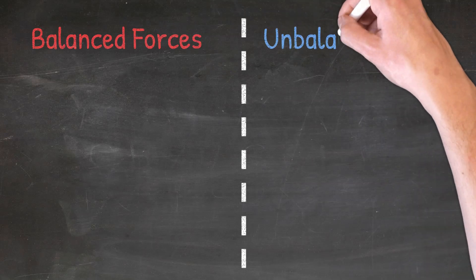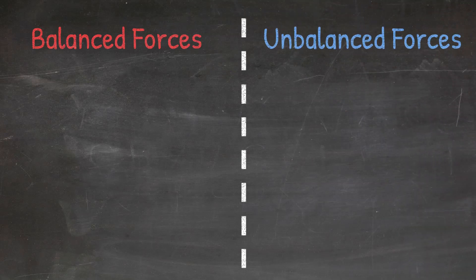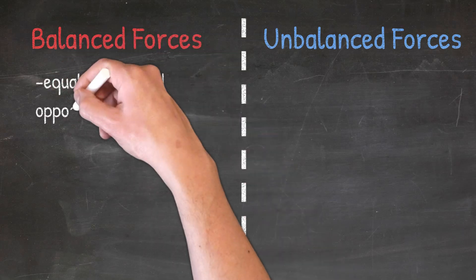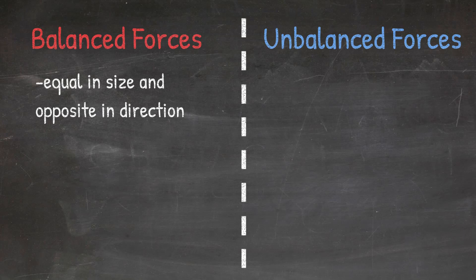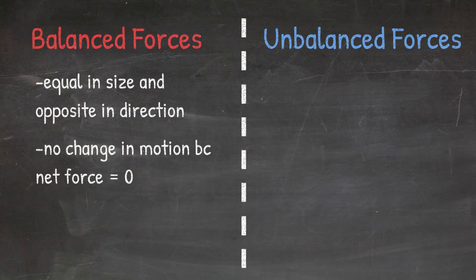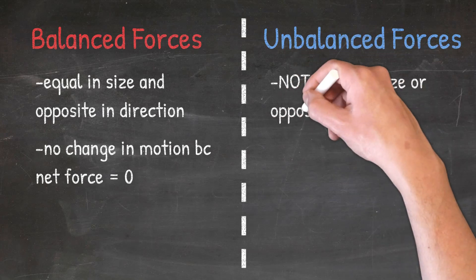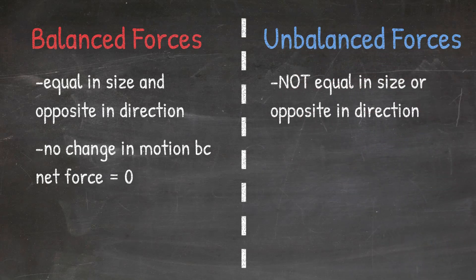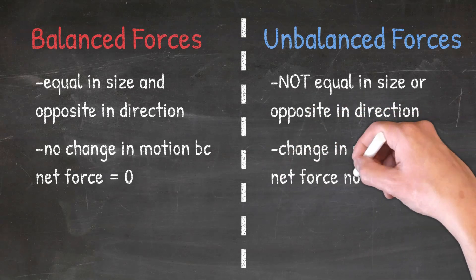When looking at the net force, we can also determine whether the forces acting on an object are balanced or unbalanced. Balanced forces are forces that are equal in size and opposite in direction. There will be no change in motion because the net forces will be zero. Unbalanced forces are forces that are not equal in size or opposite in direction. When the forces are unbalanced, there will be a change in motion because the net force will not be zero.